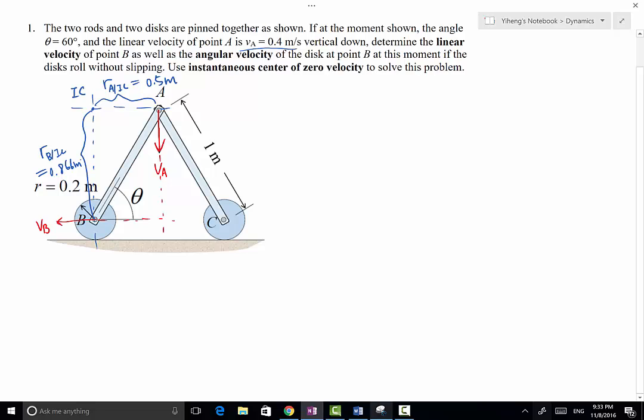So at this point, we can write for VA, for the velocity of point A on this rigid body AB, VA equals RA relative to IC times omega AB. And VA is known, and that is 0.4 meter per second. RA relative to IC is 0.5 meter that we just determined earlier, times omega AB.